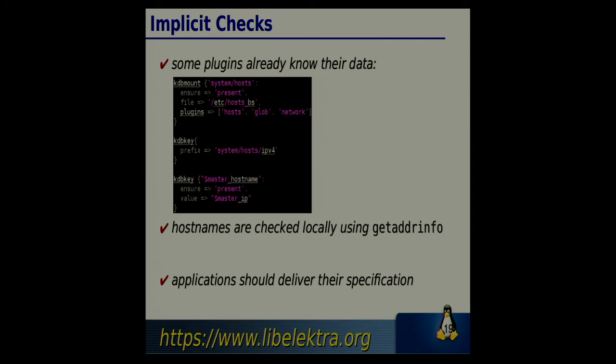The long-term goal is that application developers, because they know best what configuration actually expects, should write the specification. It's really simple because the specification is also in key-value pairs - you simply say this is an IPv4 address, and you've already encoded all the information we need. What we actually want is to go beyond DevOps. It's nice if you have a group of developers and operations working together, but it's not always possible. The long-term goal is to have a common language to speak between developers and operations so that we can communicate more efficiently what we expect as valid configuration.